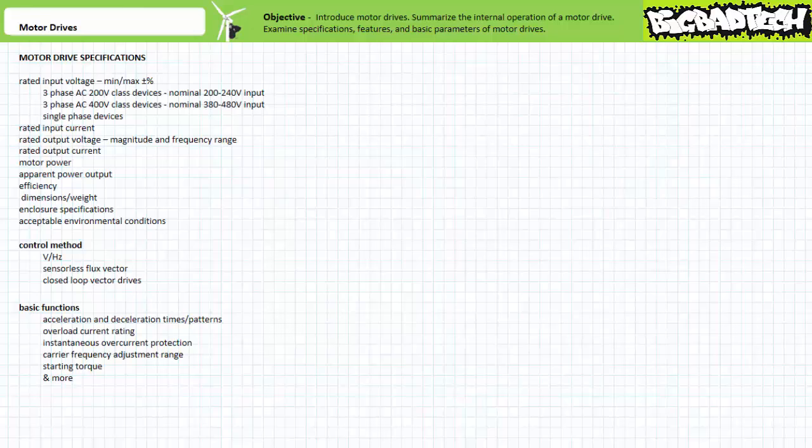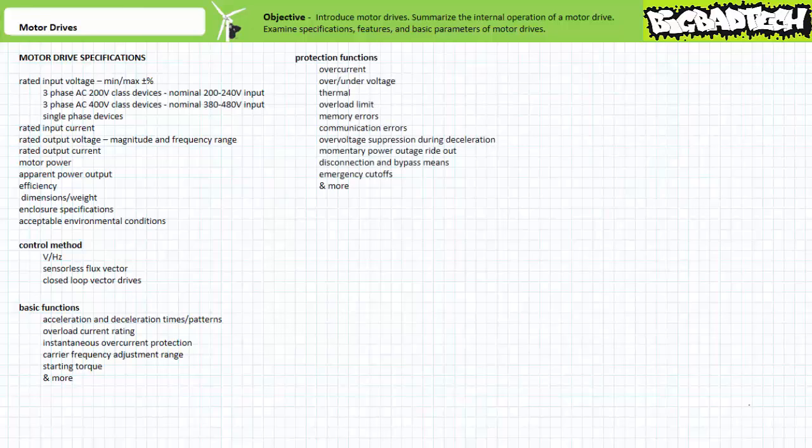Motor drives may also be specified with respect to functional and control specifications, like soft starts, acceleration and deceleration times and patterns, overload current rating, instantaneous overcurrent protection, carrier or switching frequency adjustment range, and starting torque. Motor drives may also be specified with respect to protection functions, like overcurrent, overvoltage, undervoltage events, thermal errors, overload limits, memory errors, communication errors, overvoltage suppression during deceleration, momentary power outage ride-out, disconnection and bypass means, and emergency cutoffs.